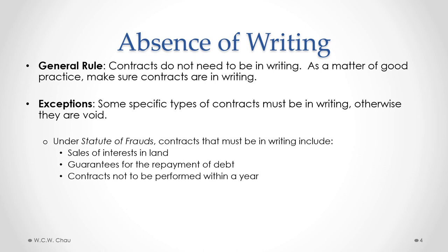The second type of contract is contracts for guarantees for the repayment of debt. This is where someone is guaranteeing someone else's debt. So if you apply for a loan from the bank, the bank won't lend you money unless someone else provides a guarantee on the loan. You still owe that money under the loan, but if you got, let's say, your mom to provide a guarantee, and you fail to pay back that loan, the bank can turn to your mom and make her liable for that loan under the guarantee. So that guarantee contract between the bank and your mom has to be in writing based on the requirement of the Statute of Frauds.